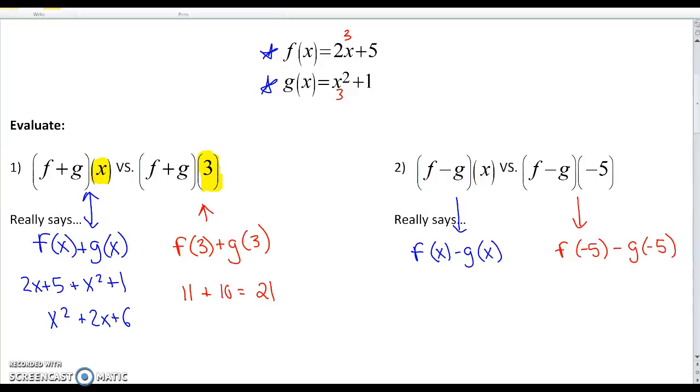If done correctly, you should have translated this notation. This really means f of x minus g of x. Not that you're distributing, but you can kind of think about it that way. This really means f of negative 5 minus g of negative 5. So let's start with f of x and g of x. f of x is 2x plus 5, and you're going to subtract g of x, which is x squared plus 1.